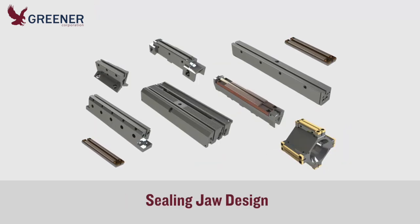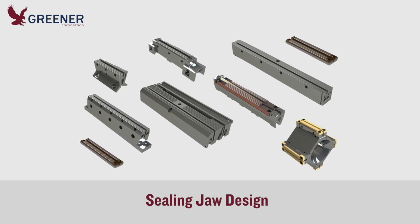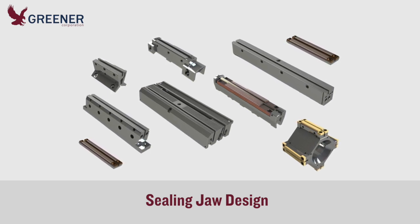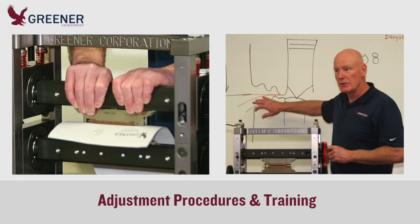Make sure that your sealing jaws — the serration pattern, materials, and other features — are designed to maintain consistent pressure levels and heat transfer for your specific film, package configuration, and running conditions. To ensure more consistent seal quality across multiple shifts, machines, lines, and locations, standardize and provide training for optimal adjustment procedures.